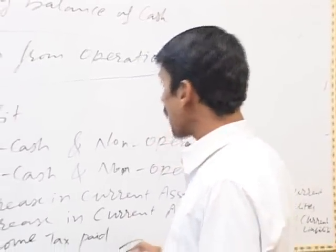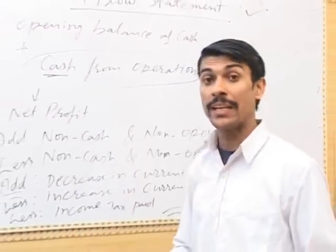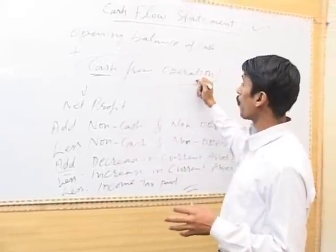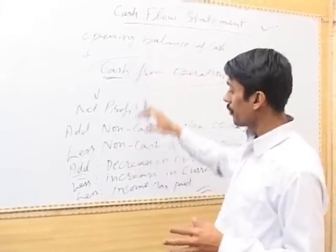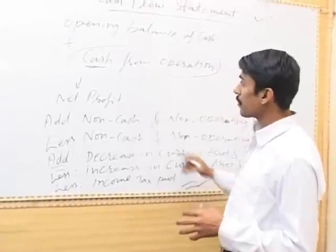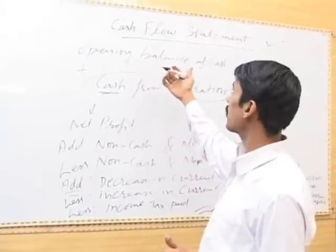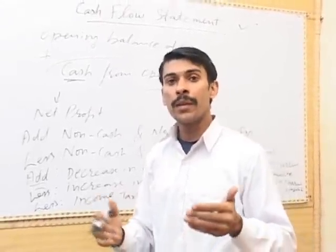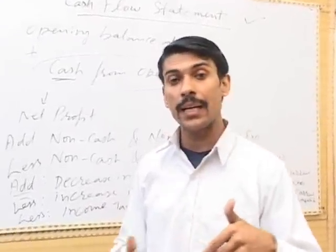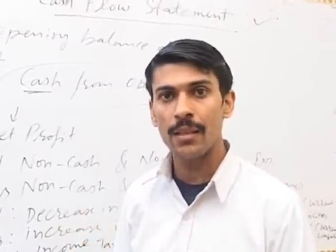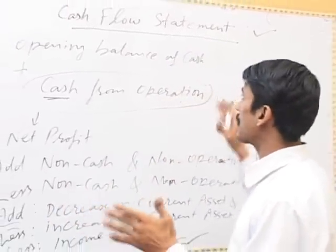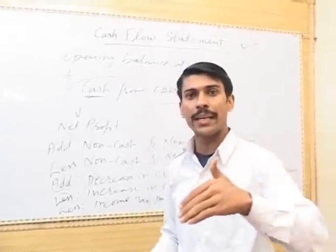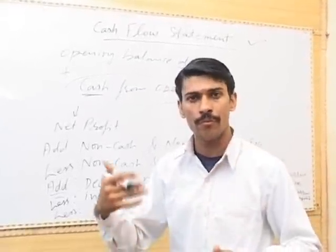Income tax paid is a cash expense and an operating expense. The resulting balance will be cash from operations — if positive, it is added; if negative, it is deducted from the opening balance of cash. In the next lecture, we will explain how to calculate cash from investment and cash from financing.